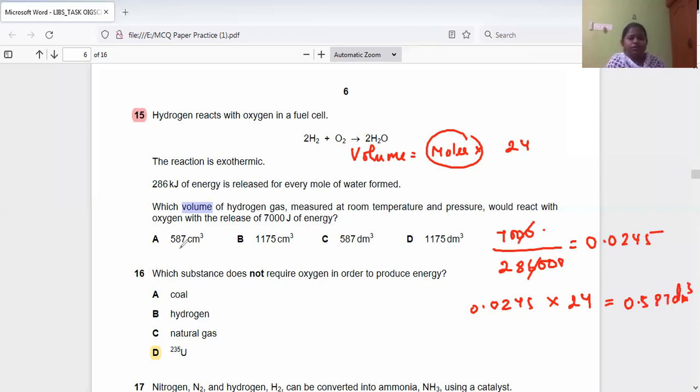The answer given here is 587 decimeter cube, but that's not correct because we have 0.587. The answer is in centimeter cube. So 0.587 times 1000, converting decimeter cube to centimeter cube, equals 587 centimeter cube.